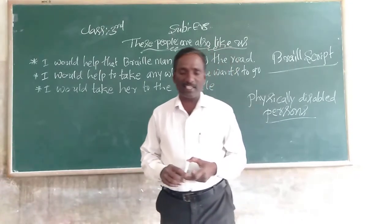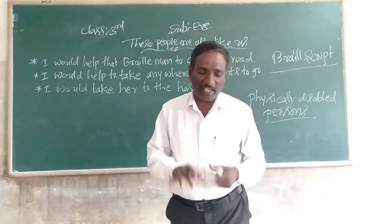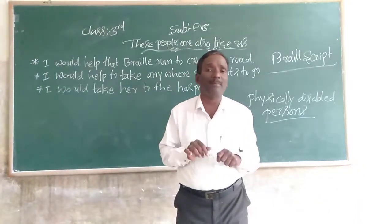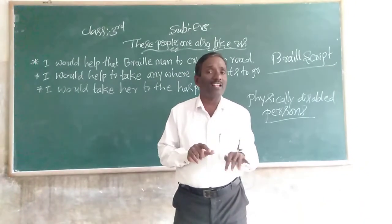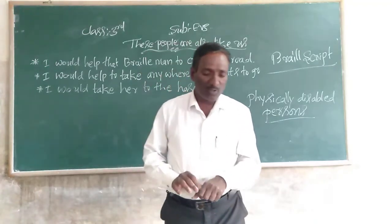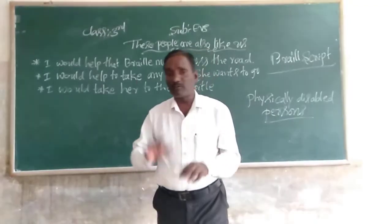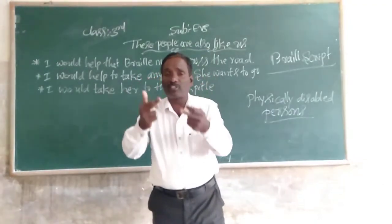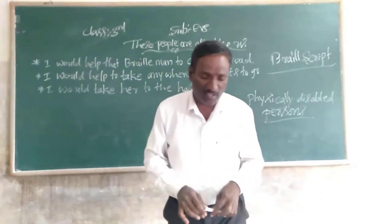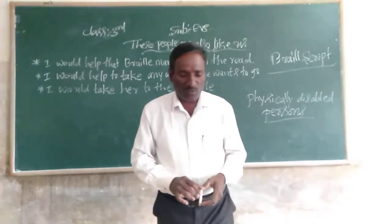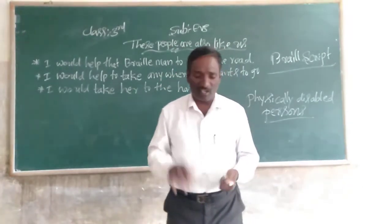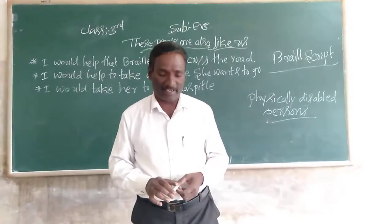The Braille letters can be identified by touching the dots. Only blind people read Braille script, using their fingers to touch the dots without the help of their eyes. You can recognize the letters with the help of the number of dots.